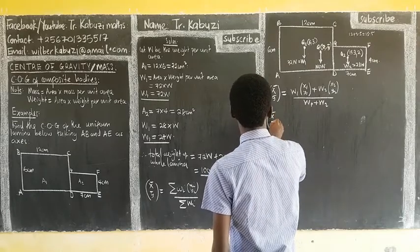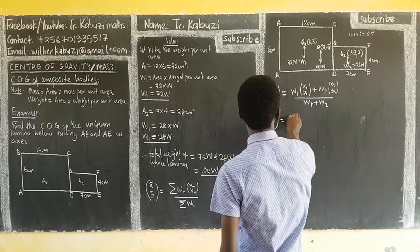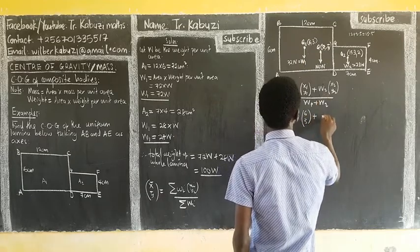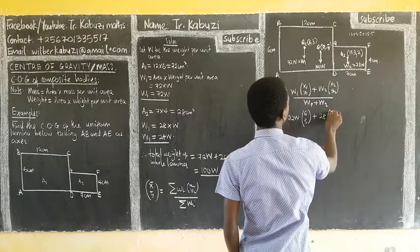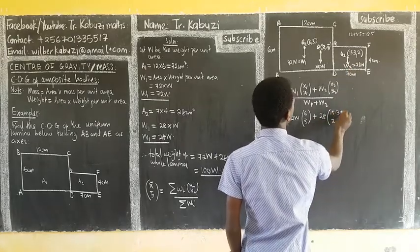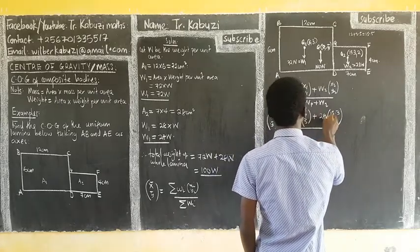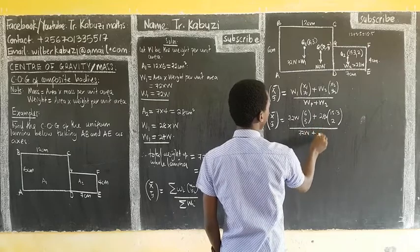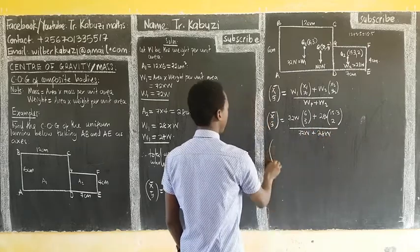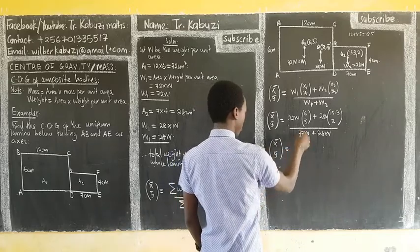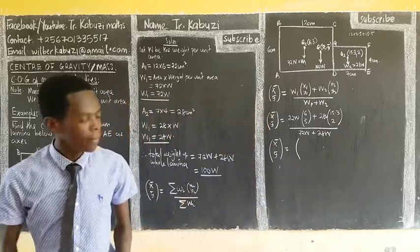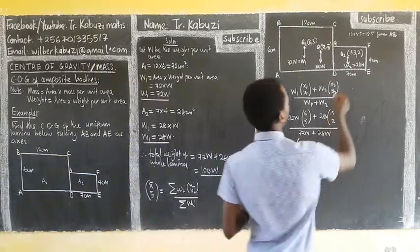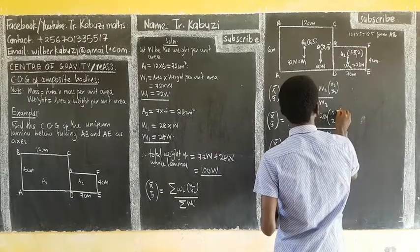So we get: x̄, ȳ = [(72W × 6) + (28W × 15.5)] / (72W + 28W). We can cancel the W terms. For x̄: (72 × 6) + (28 × 15.5) = 432 + 434 = 866. And for ȳ: (72 × 3) + (28 × 2) = 216 + 56 = 272. The denominator is 100.